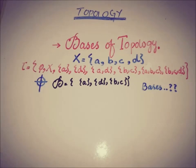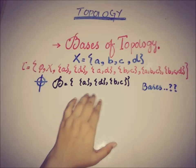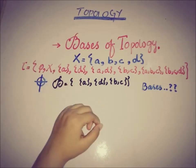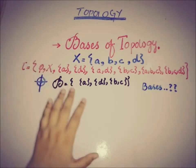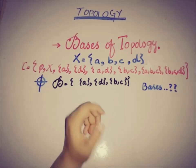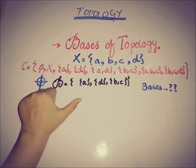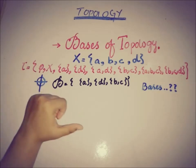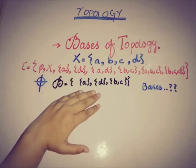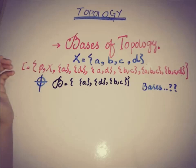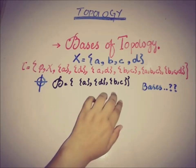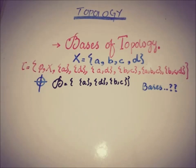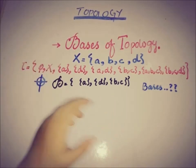By definition, all elements of the basis B are contained in the topology. This implies that every member of the basis is an open set. The definition of a basis says the elements of the basis are contained in tau, so we get the useful information that elements of the basis are open sets. We now have to show that all elements of tau can be made by taking arbitrary unions of the elements of the basis.